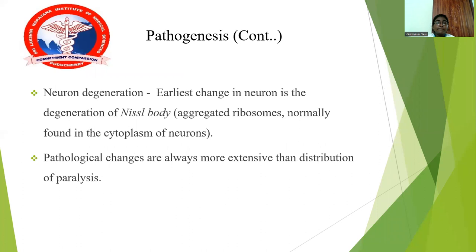The earliest change that takes place in neurons is neuronal degeneration — specifically degeneration of Nissl bodies, which are aggregated ribosomes normally found in the cytoplasm of neuron cells. The pathological changes are always more extensive than the distribution of the paralysis.